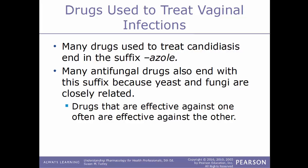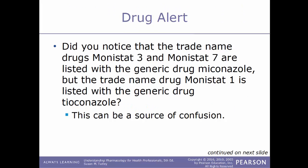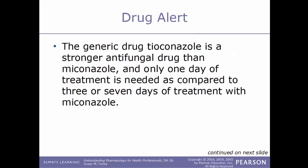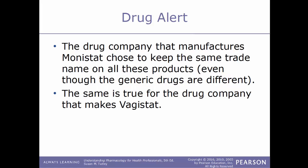A drug alert regarding these trade names: Monistat-3 and Monistat-7 are listed with the generic drug miconazole, but Monistat-1 is listed with the generic drug tioconazole. Tioconazole is a much stronger antifungal drug than miconazole, and only one day of treatment is needed compared to three or seven days with miconazole. The drug company that manufactures Monistat kept the same trade name on all products even though the generic drugs are different — the same is true for Vagistat. The numbers after the trade names reference the number of days of treatment.